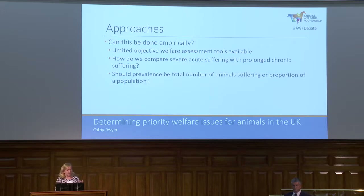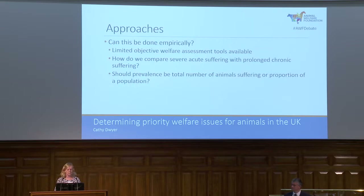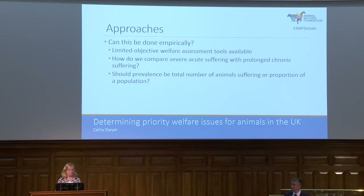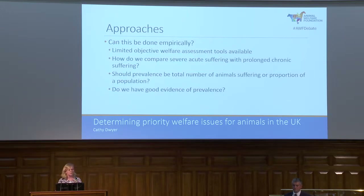Thinking about prevalence — if we consider total numbers, something like fish or broiler chickens will always rise to the top because these are the most numerically important in terms of our management. Or is it the proportion of a population? If 100% of a particular population suffer, is that more important than 10% but of an enormous number of animals? And do we have good evidence of prevalence to allow us to really make these sorts of judgements?